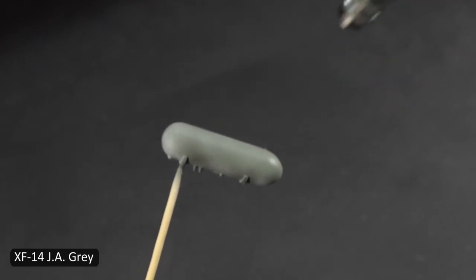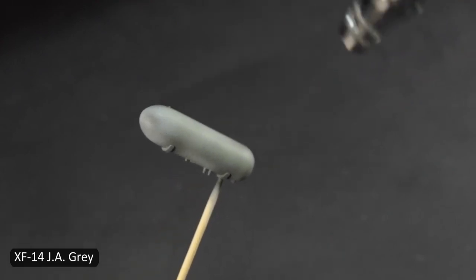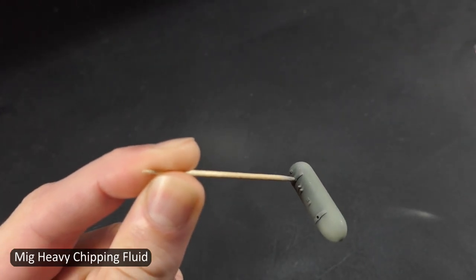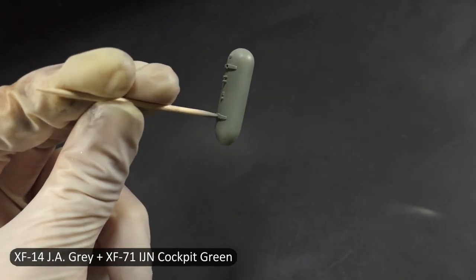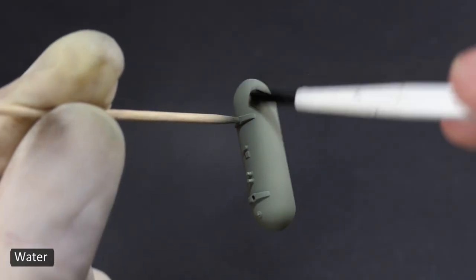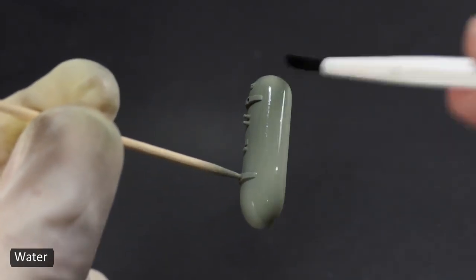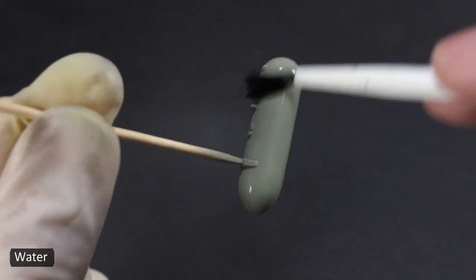Once it's dry I'll spray it with chipping fluid, followed by a top coat of a slightly lighter version of this JA Grey. This way I can chip the top coat and kind of get a multi-tone worn out look on these drop tanks. I also use the same technique on the propeller except with the color brown.